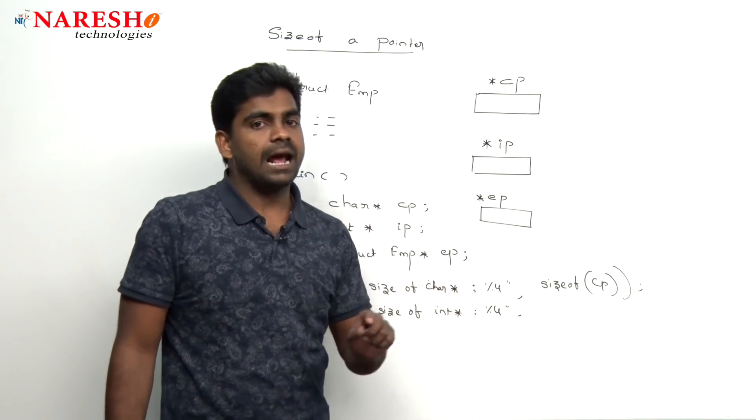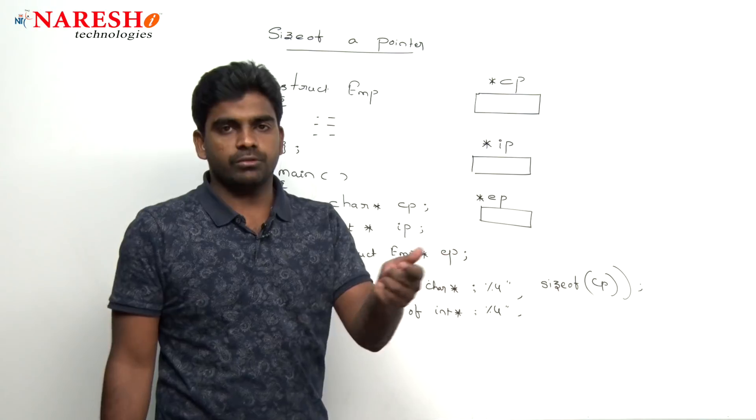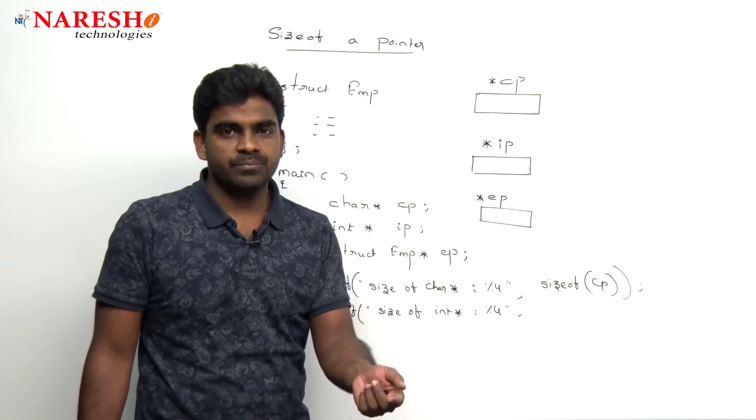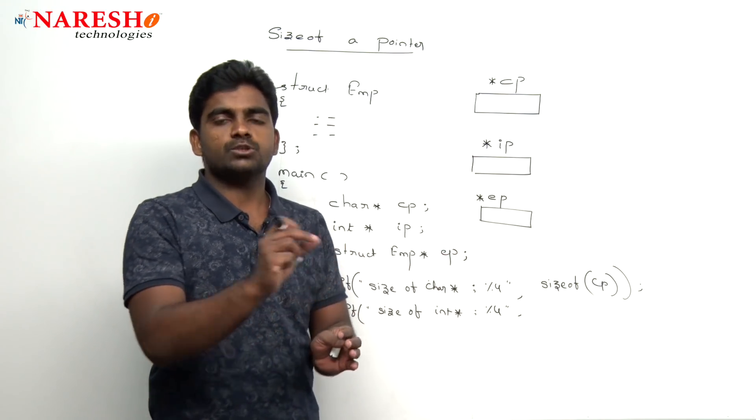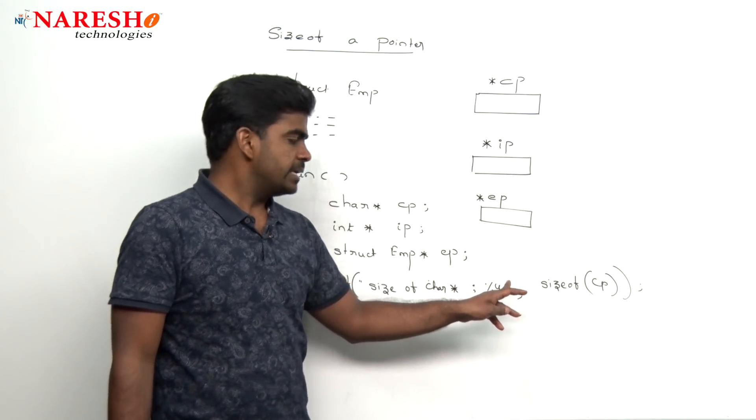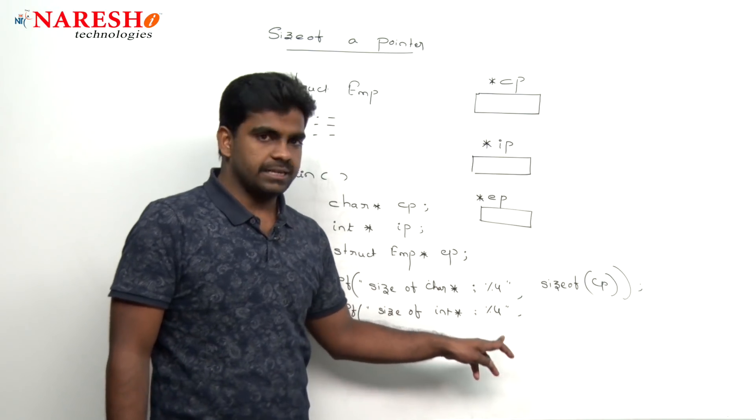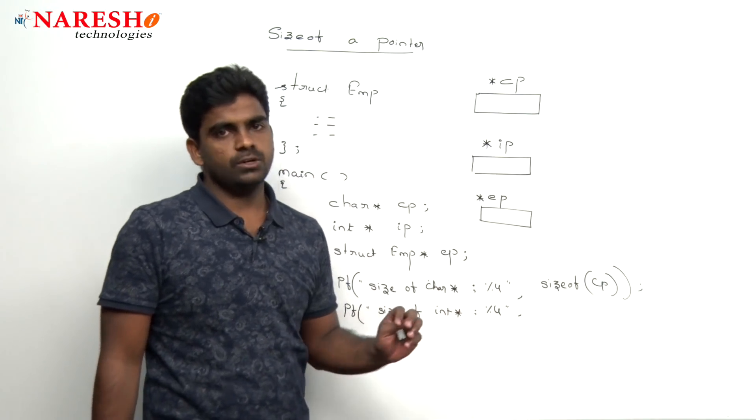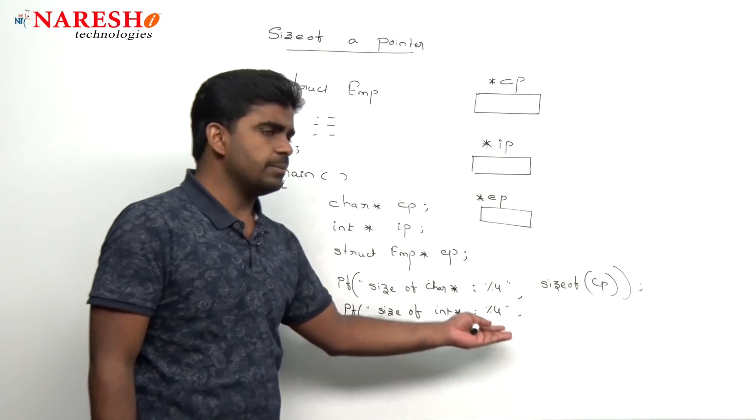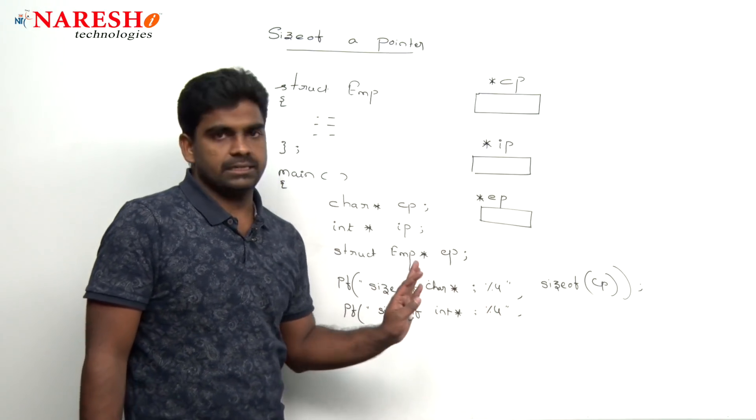But here we are not printing that address, we are printing only the size, it can be 2, 4, 8 like that. But pointer size is always 2 bytes or 4 bytes or 8 bytes. So just simply to print here it is 2, 4, 8, anyway it is a positive integer, we are giving that unsigned integer value or percentage d also you can give. It is recommended because anyway it is a positive value we know that. So unsigned integer I have given.